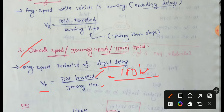For example, total journey time is 4 hours — 3 hours of travelling time plus 1 hour of delay time. So 3 plus 1 equals 4 hours, and this gives us the overall speed.